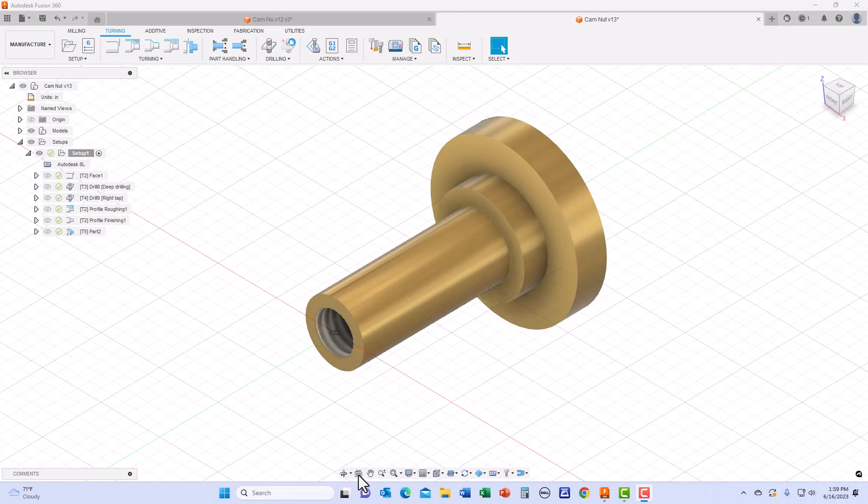I then transferred this cam nut design into the manufacturing module of the Fusion 360 software and designed the various tooling operations to machine the cam nut. I will be using four turning tools and six separate machining operations to machine the cam nut on the Tormac 8L lathe.